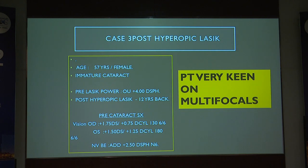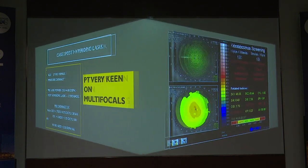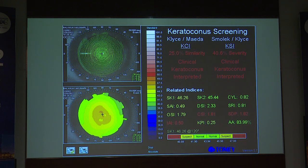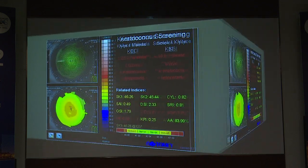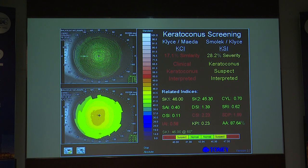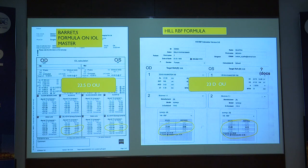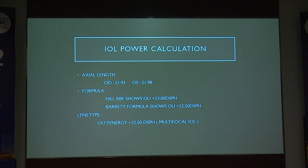A patient with pre-LASIK power of plus four was very happy and now keen on multifocal lenses. The topography map shows a keratoconus interpretation, but it is actually not keratoconus — it is a hyperprolate cornea. When you do a hyperopic ablation you get a hyperprolate cornea which the machine interprets as keratoconus. You can go ahead as long as the ablation is well centered. Using Barrett's formula on IOL Master 700 and Hill RBF formula, calculations were very close; we put a plus 2.25 lens and the patient was very happy.